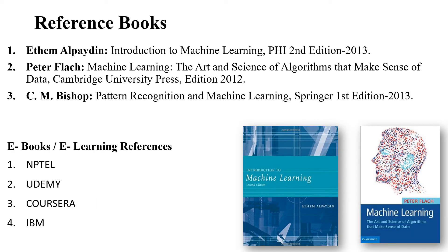The next thing is reference books. One is by Ethem Alpaydin — 'Introduction to Machine Learning,' whose PDF is also available on the internet. This is one of the most useful books for machine learning. Another book is by Peter Flach — 'Machine Learning: The Art and Science of Algorithms.' And another book is C.M. Bishop's 'Pattern Recognition and Machine Learning.' You should refer to these reference books for study purposes.